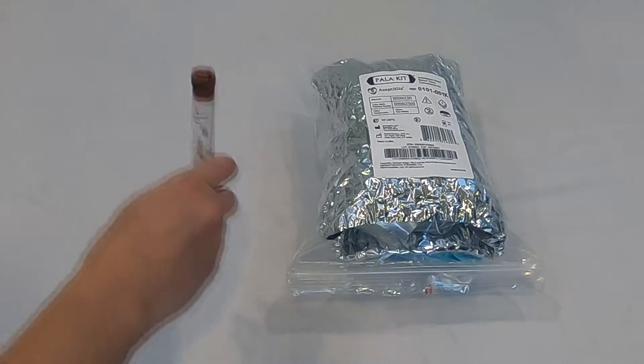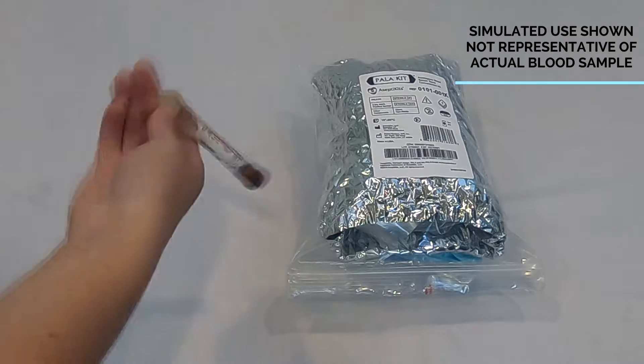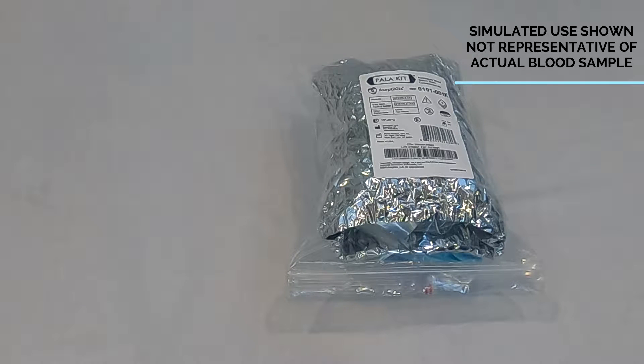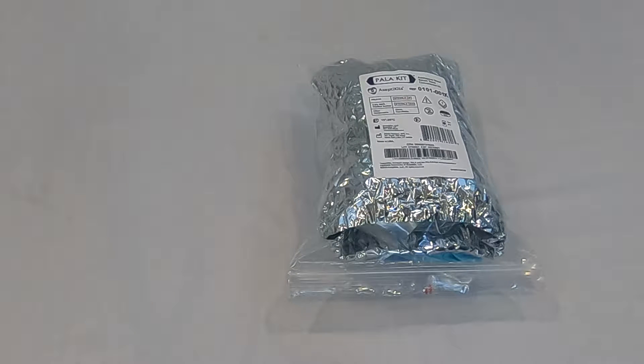Remember to completely invert the serum separator tube at least five times to ensure proper mixing of the clot activator with the blood. Rest the serum separator tube upright and wait 30 minutes for the blood to coagulate.